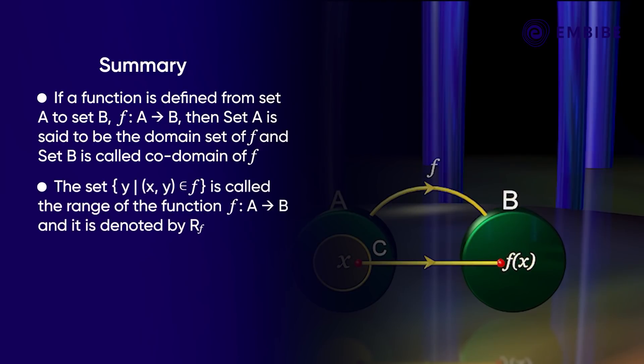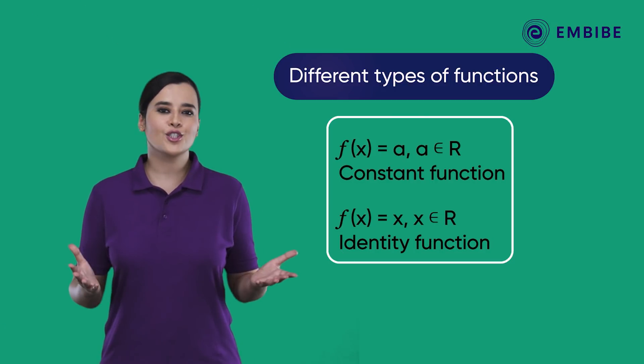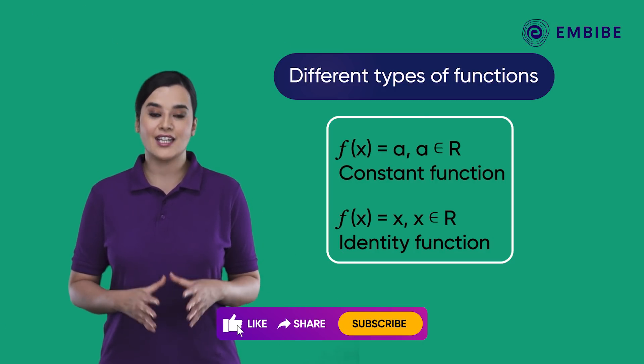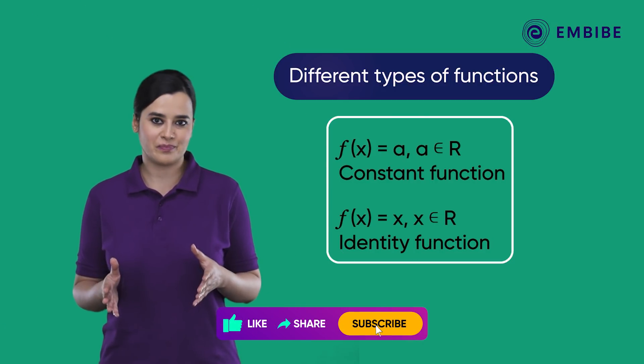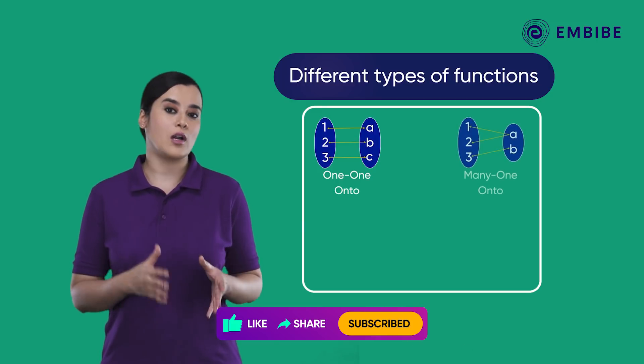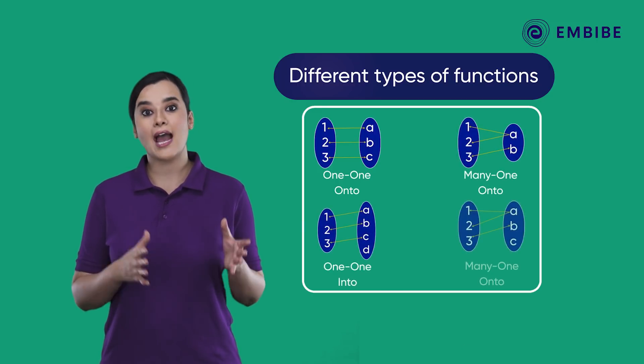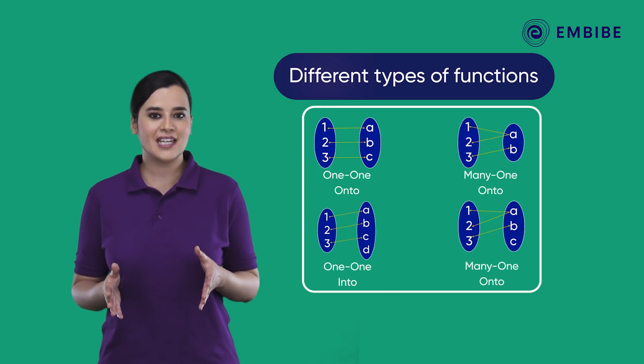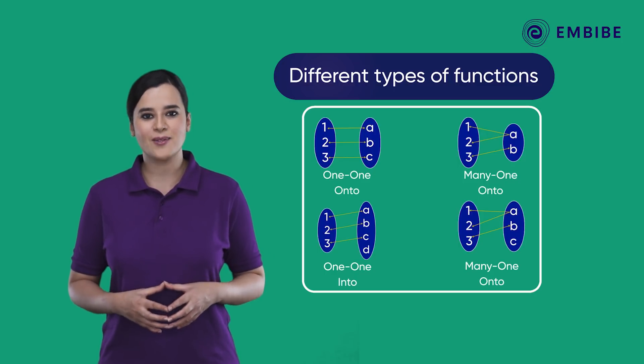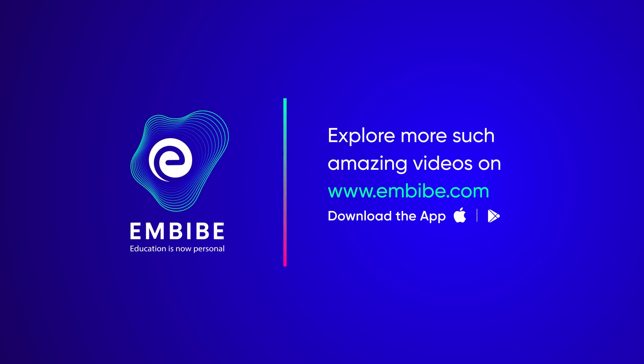The set {y such that (x, y) belongs to f} is called the range of the function f: A to B, and it is denoted by r_f. Functions are of different types like constant function and identity function. Also, we have one-to-one, many-one, into, and onto functions. Let's jump into our next video to understand these concepts in a better way. Keep imbibing, we believe in you.